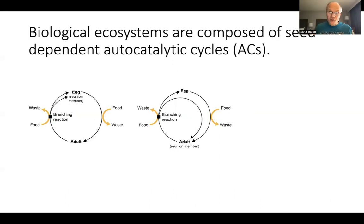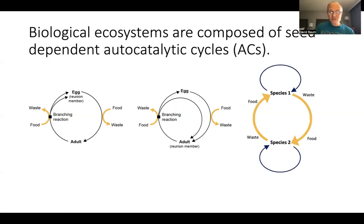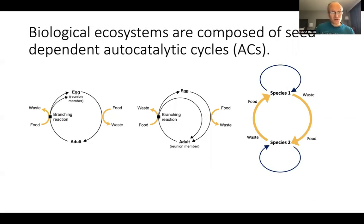It's also worth remembering that there are high-level autocatalytic cycles resulting from ecological interactions among individual species. For example, two pairwise obligate mutualists form another high-level autocatalytic cycle.